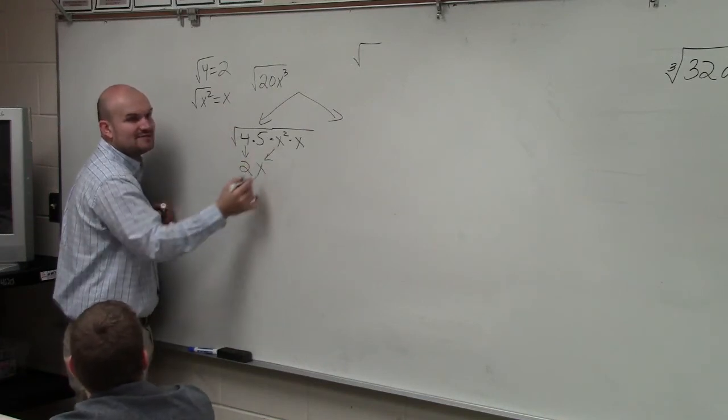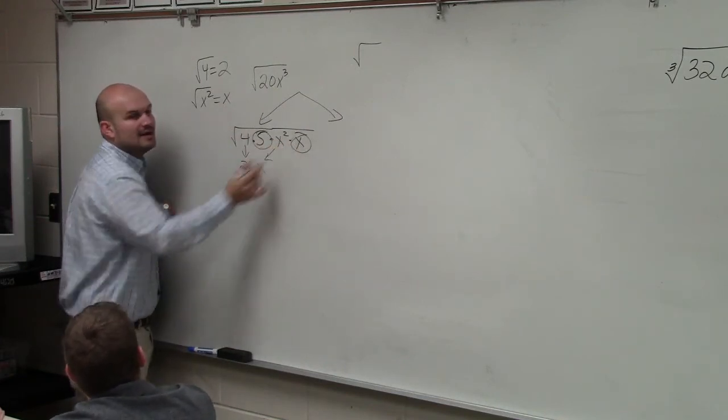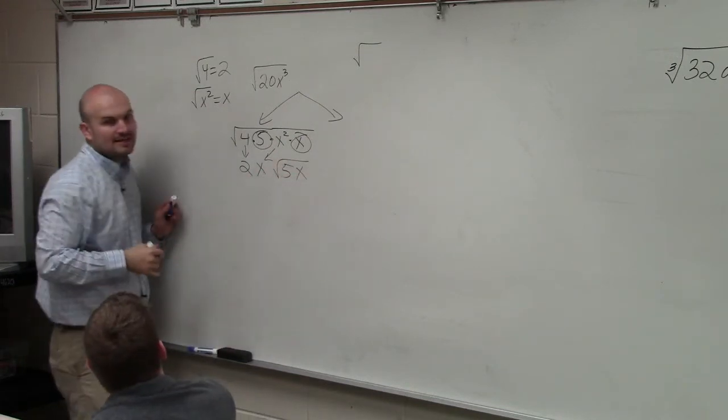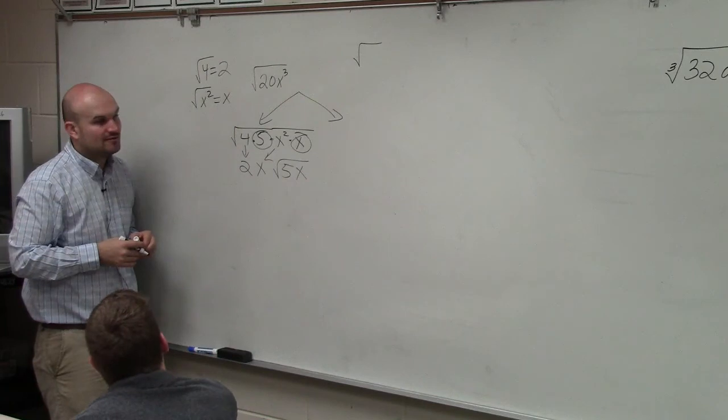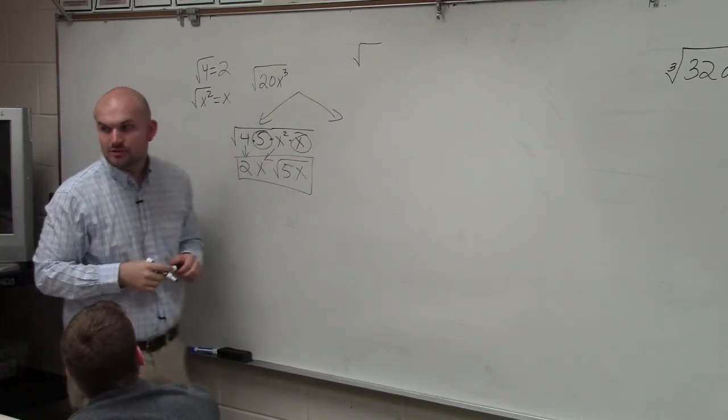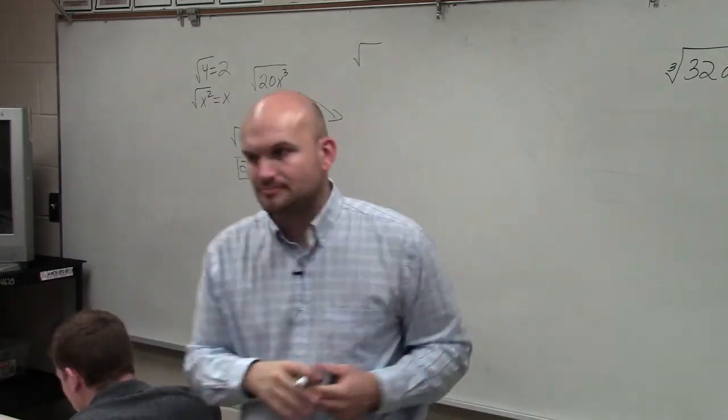So therefore, what's left in? I still have a 5 and an x. So those have to remain under the radicand symbol. They have to remain as my radicand. So my final answer is 2x times square root of 5x.